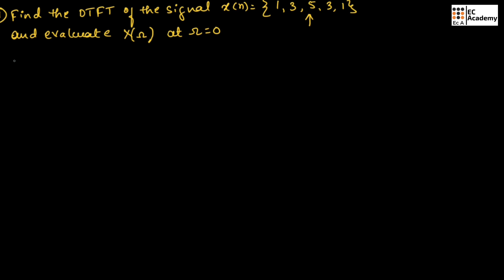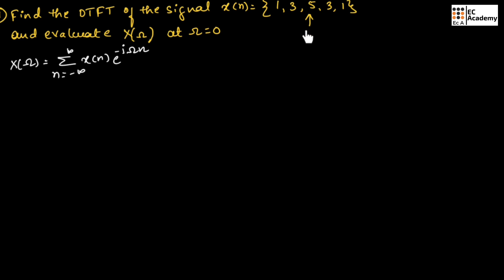From the definition of DTFT, we know X of omega can be written as summation of n is equal to minus infinity to infinity of X of n exponential to the power of minus j omega n. If we observe the given sequence, this sequence is ranging from minus 2 to 2. Taking 5 as the origin point, we can write the summation of n is equal to minus 2 to 2 of X of n exponential to the power of minus j omega n.